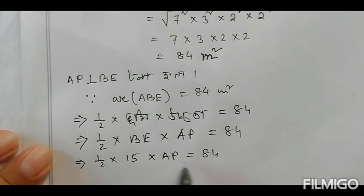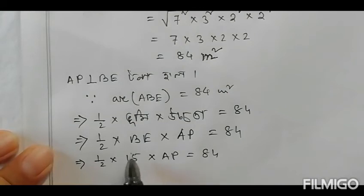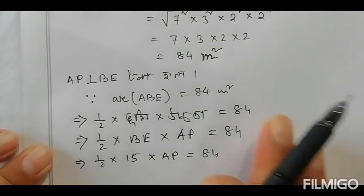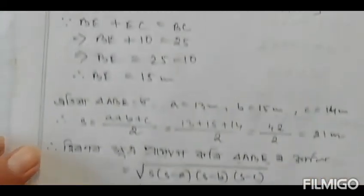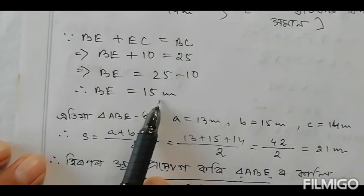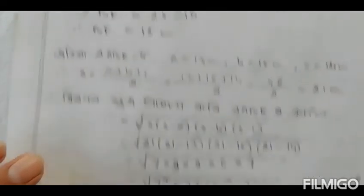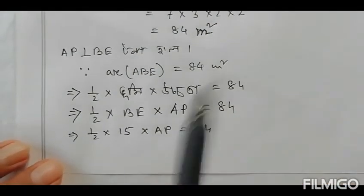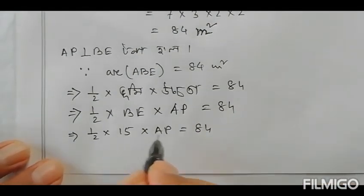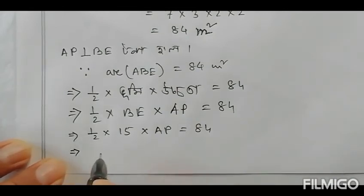So half into 15 into AP equals 84. From this, AP equals 84 divided by 15 times 2. We write BE as 15 meters and use the formula to find the height AP.